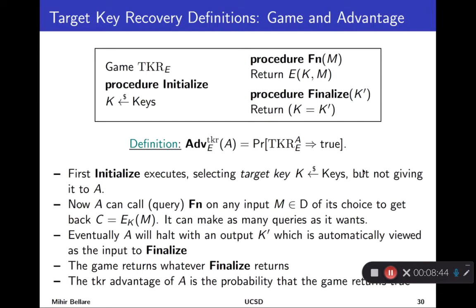Now, notice that what makes this procedure non-trivial in terms of the information it provides to the adversary is that the key K is unknown to the adversary. So it couldn't have computed E of K and M on its own. So when it gets that back, it's information. And what the adversary is doing is it's trying to exploit that information to figure out what the key K is.